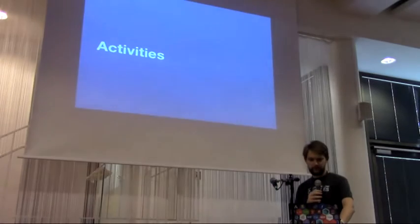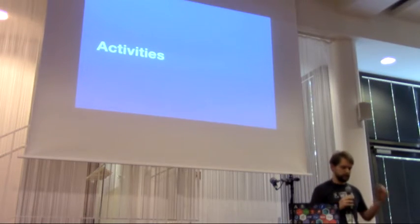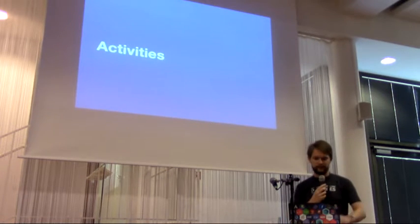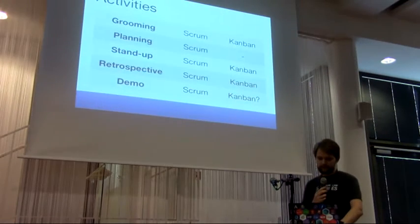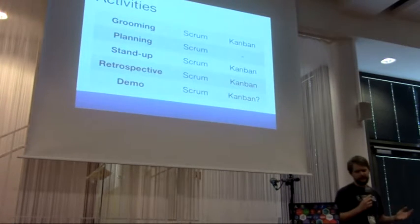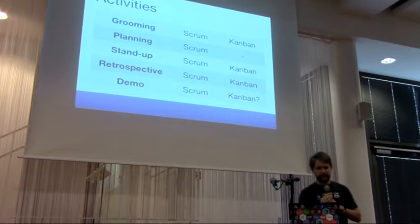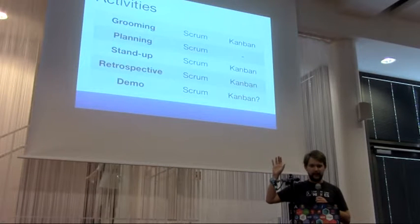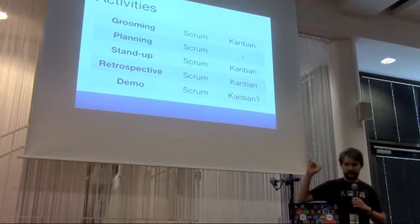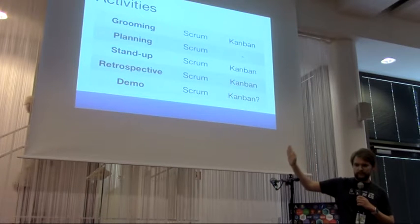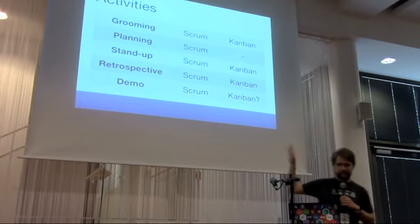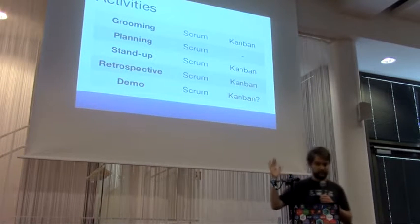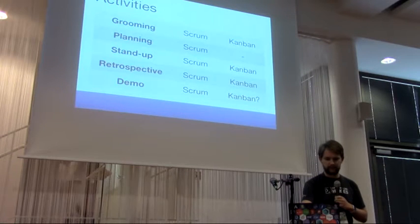Let me explain these a bit more with activities — what you actually do. There are five major activities: grooming, planning, stand-up, retrospective, and demo. Not all apply to both methodologies. Scrum uses basically all of them, but Kanban just uses some.